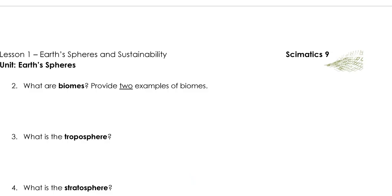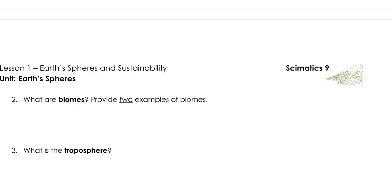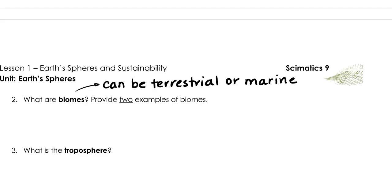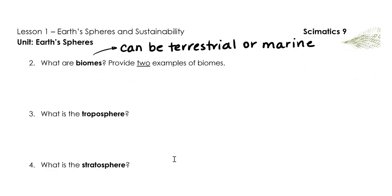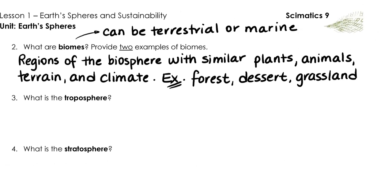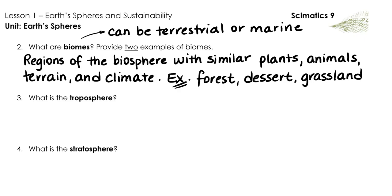What are biomes? We should note that biomes can be terrestrial or marine. But usually when we refer to biome, we're referring to terrestrial biome because there is a huge amount of diversity in how we classify the different terrestrial biomes — the biomes on the land — whereas pretty much the entire ocean is referred to as the marine biome. These are regions of the biosphere with similar plants, animals, terrain, and climate. For example, you could have a forest biome, a desert biome, or a grassland biome.